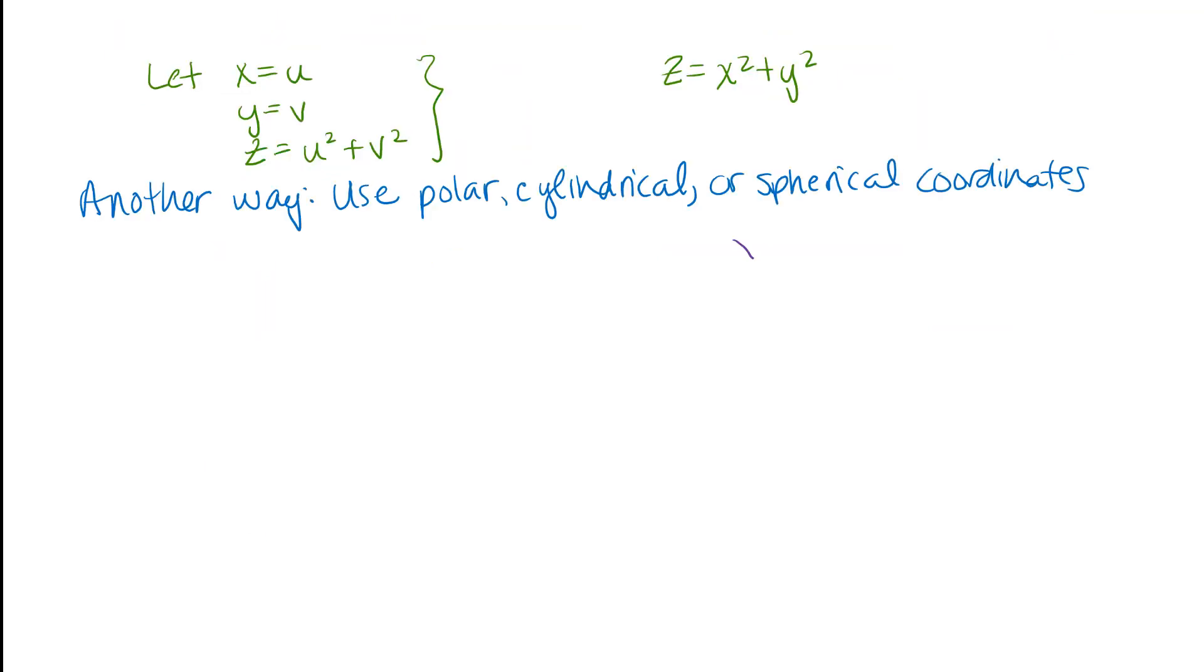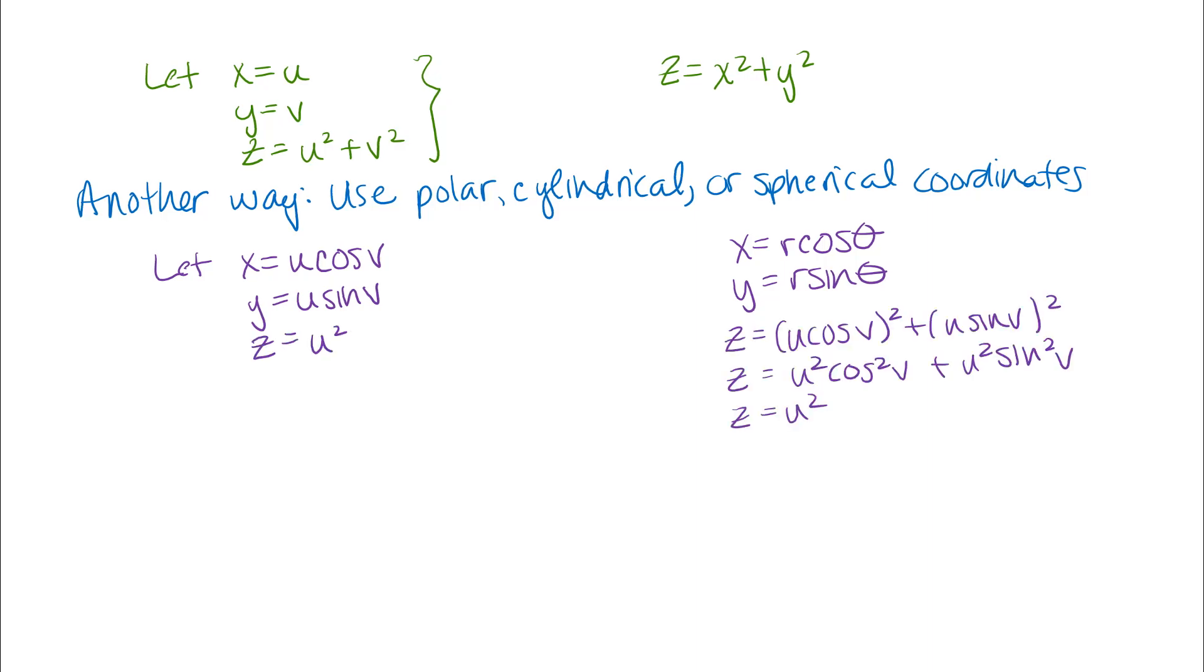In polar coordinates, we would let x be r cosine theta and y r sine theta. And so I there have x as a function of two variables and y as a function of two variables. I could just use r and theta for my inputs for my parametric equations. Or you can convert those to u's and v's. So I could let x be u cosine v and y be u sine v. And then in order to get the z for this paraboloid, I would just substitute those in x and y in my equation and simplify.